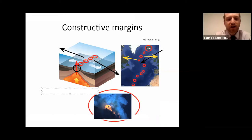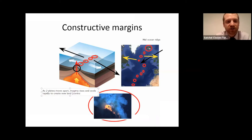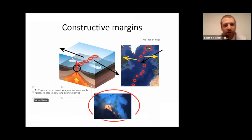As two plates move apart, magma rises and cools rapidly to create new land. Therefore we call it a constructive boundary, because it's making new land.